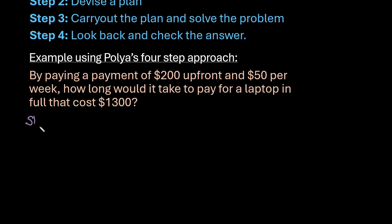So step one, remember, is to understand the problem. So this is where we look at the information that we know, we're trying to figure out what we're trying to get to. So we know that we paid $200 towards that total amount upfront. So we've already paid $200 of the $1,300.